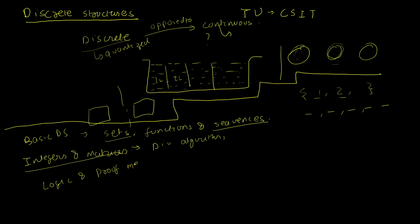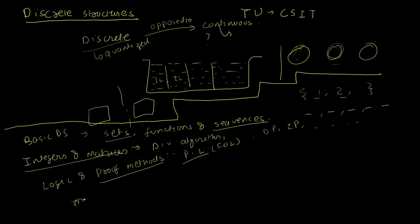The next topic is logic and proof methods — a favorite of mine. In this chapter we'll be talking about propositional logic, also called first-order logic, which you've already encountered in digital logic in your first semester. We'll learn different proof methods: direct proofs, indirect proofs, proof by contradiction, and other methods like the Pigeonhole Principle.